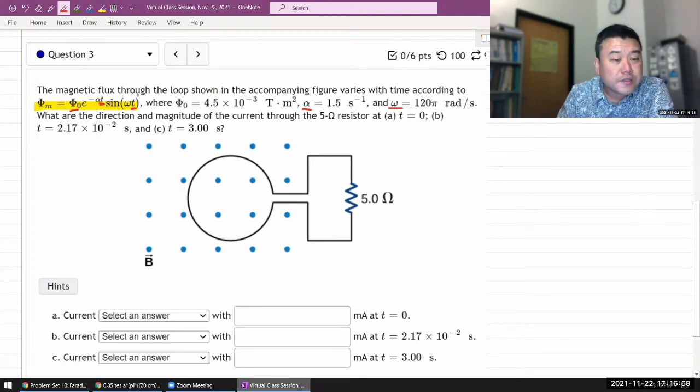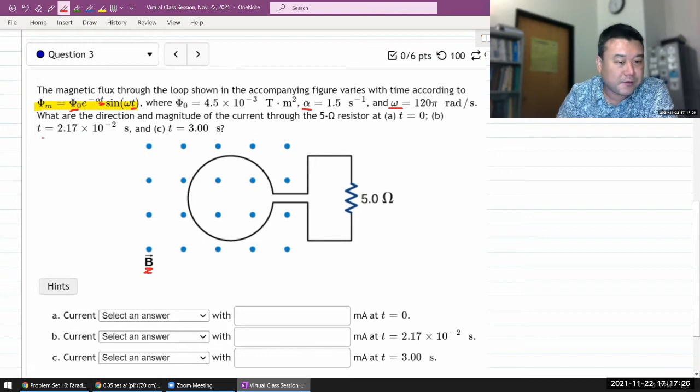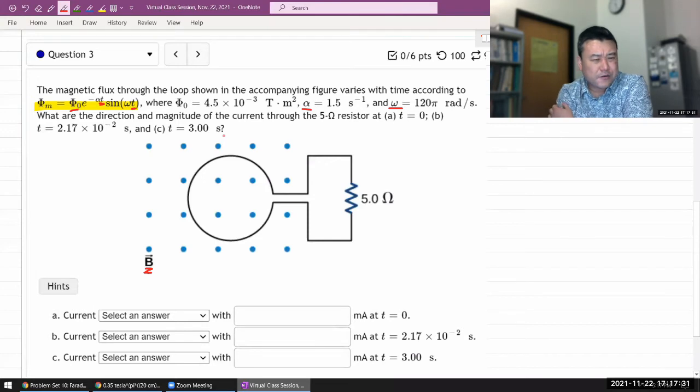This looks like exponentially decaying or kind of damped oscillation, maybe. So the magnetic field itself might be produced by something that's oscillating, with oscillation damping out over time. So it asks, what are the direction and magnitude of the current through the 5-ohm resistor at time equals zero, time equals this thing, and time equals three seconds? I think those three numbers are significant, so I better do all three.